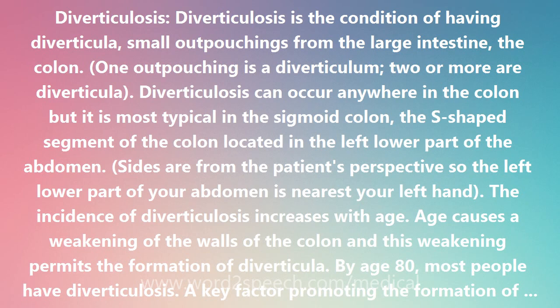Diverticulosis can occur anywhere in the colon, but it is most typical in the sigmoid colon, the S-shaped segment of the colon located in the left lower part of the abdomen. Sides are from the patient's perspective, so the left lower part of your abdomen is nearest your left hand.